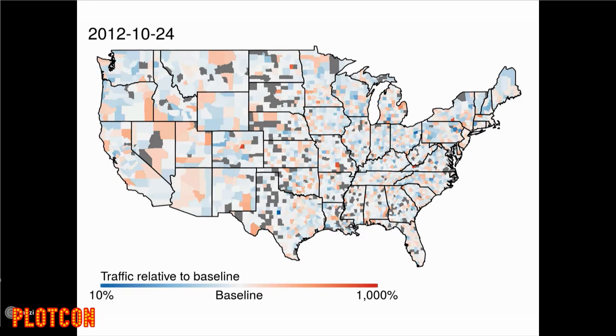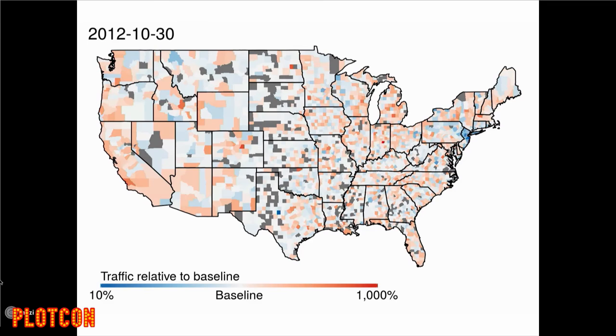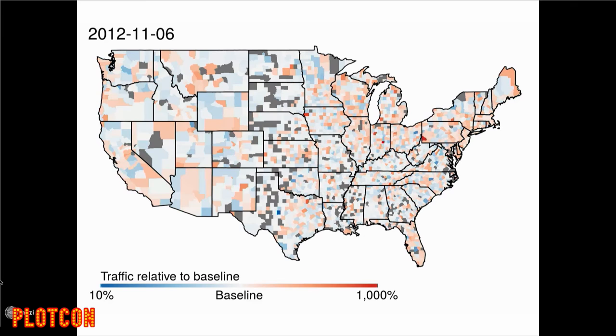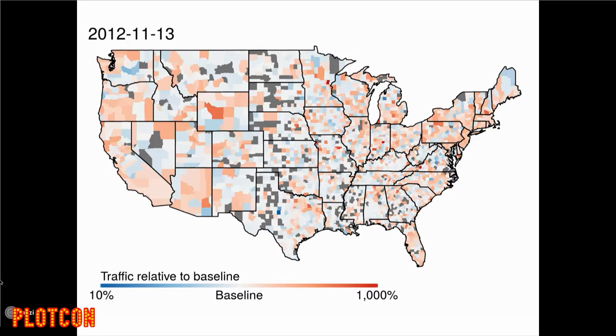This is a movie starting from two weeks before the disaster. The hurricane hit right at the end of October. You see traffic fluctuating around the country, and it bleeds into the holidays, so it's a little harder to disambiguate those two causes. But you really saw how it spiked everywhere except the northeast, and then it went up in the northeast when it went back down in the rest of the country.